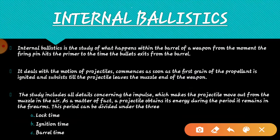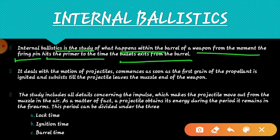इसमें सबसे पहले देख लेते हैं जो internal ballistics होता है वो क्या होता है. Internal ballistics is the study of what happens within the barrel of a weapon from the moment the firing pin hits the primer to the time of the bullet's exit from the barrel. Basically, जो आपका internal ballistics होता है वो barrel के अंदर जितना कुछ भी होता है, phenomena जो कुछ होता है, उसको internal ballistics में include करते हैं.